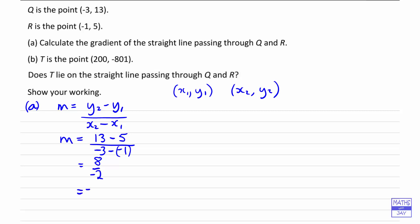So we found that the gradient is negative 4. Another way of finding the gradient would be to think about where the points are. So you could say, let's start off with the point nearest the origin - that would be the point R. And then that's at minus 1, 5. So to get from minus 1 to minus 3, we'd have to go back 2, and then to get from 5 to 13, we'd have to go up 8.